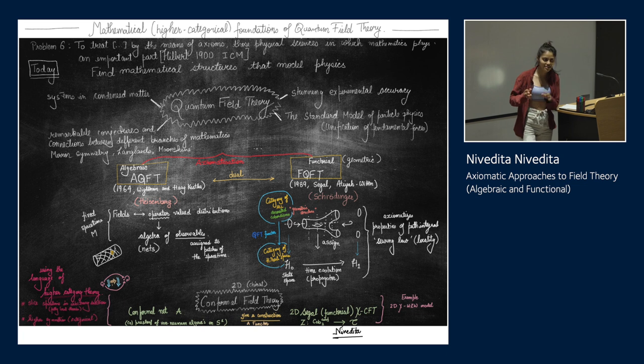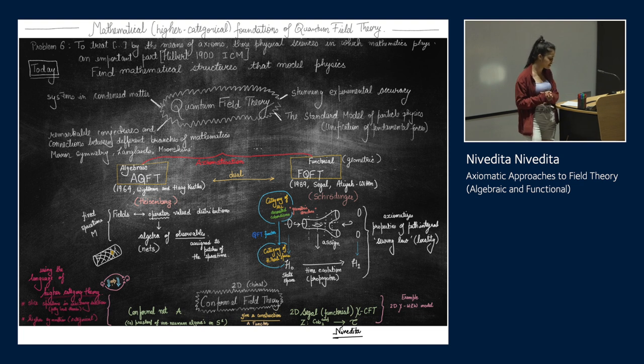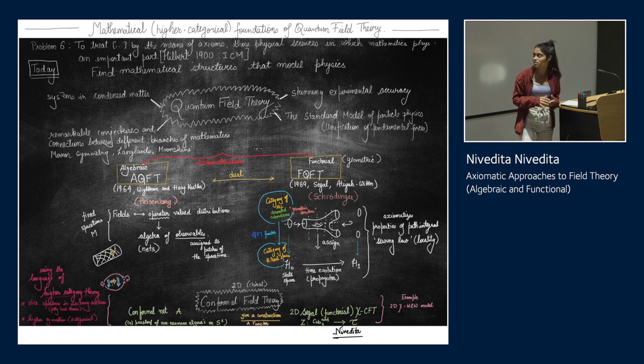Hilbert, in 1900 ICM conference gave instructions to mathematicians on what they had to do for the next century. And part six of that said that we should axiomatize physical sciences where mathematics is important. And theoretical physics has quantum field theory at its heart. It describes condensed matter systems, high energy particle physics to stunning accuracy. And it also gives us mathematical conjectures and links between completely seemingly unrelated areas of mathematics using Langlands programs, mirror symmetry and moonshine.